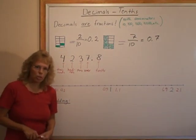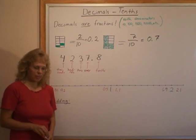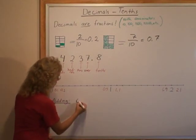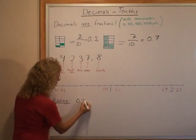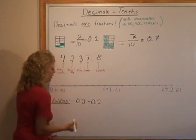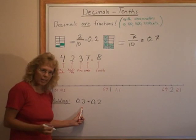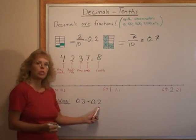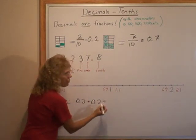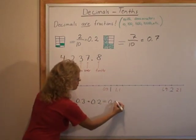Lastly I want to show you a little bit about adding decimals with tenths. It's pretty easy. For example, if I have a problem that says 3 tenths plus 2 tenths, the answer is obviously 5 tenths, and it's written as 0.5.